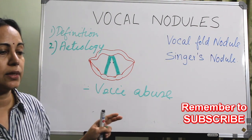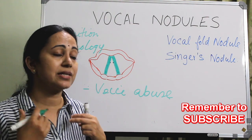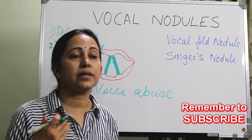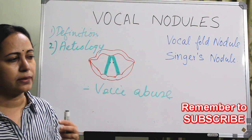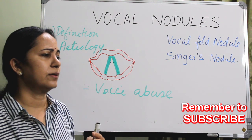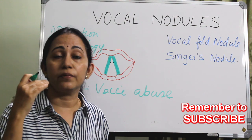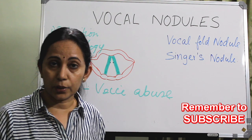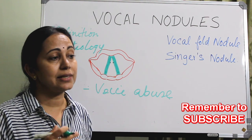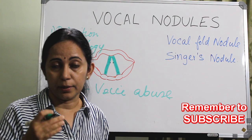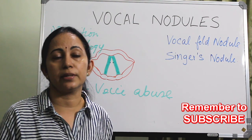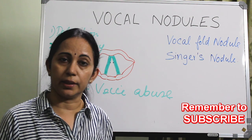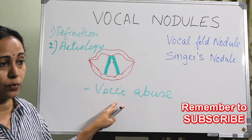Voice abuse is a forced voice production due to strain in the neck and shoulder region, causing a very harsh quality to the voice. Typical causes include talking in a very loud voice for a prolonged period, especially in background noise, singing or shouting above one's natural frequency range, and also repeated coughing and throat clearing — all of these constitute voice abuse.